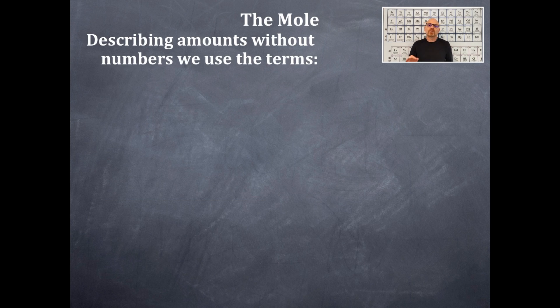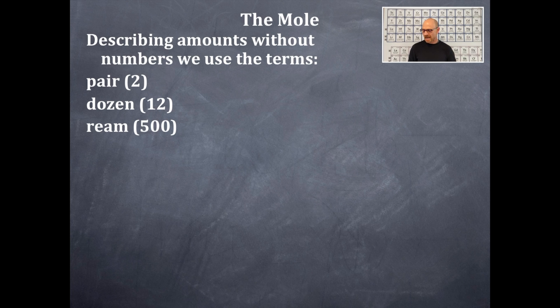The mole. We're going to first figure out what this means by describing amounts without numbers. We use the following terms. For example, a pair. I have a pair of graduate cylinders. A dozen. I've got a dozen pens. That's 12 of them. A ream. I've got a ream of paper. That's 500 sheets of paper. So you should understand that a pair means two, a dozen means 12, and a ream means 500.